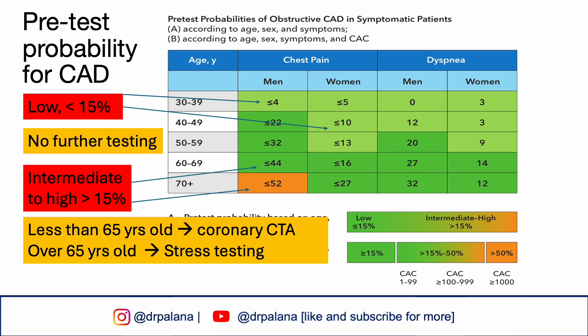Stress testing is preferred in patients over 65 years old with a high suspicion of obstructive coronary artery disease. A coronary CTA is preferred in patients less than 65 years old with lower suspicion of obstructive coronary artery disease. If the patient is able to exercise, choose an exercise stress testing — either an ECHO, SPECT, or exercise EKG. If the patient is unable to exercise, choose a pharmacological stress testing, whether it's a CMR, ECHO, PET, or SPECT.